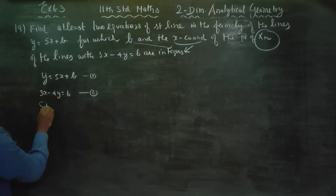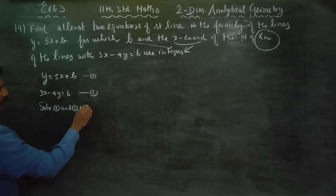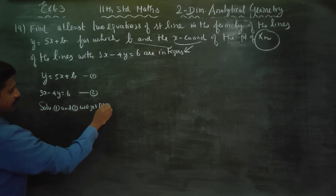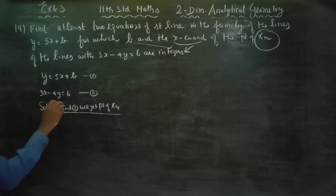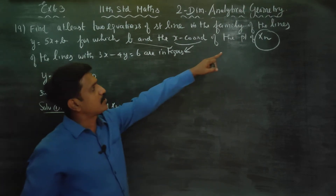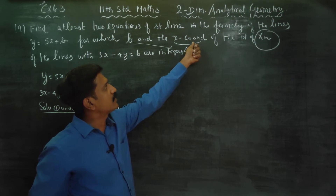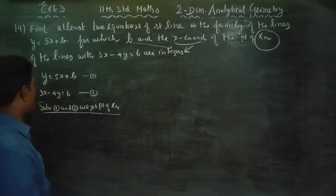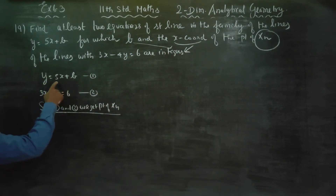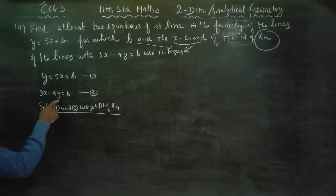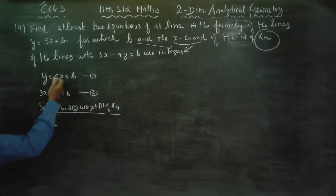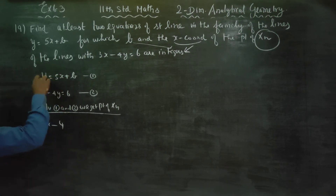Solving equations 1 and 2, we get the point of intersection. Once we solve, the answer will come automatically. The x-coordinate will come from the intersection. We will use the substitution method rather than the elimination method. Substitute y directly — the answer is almost ready once we substitute.